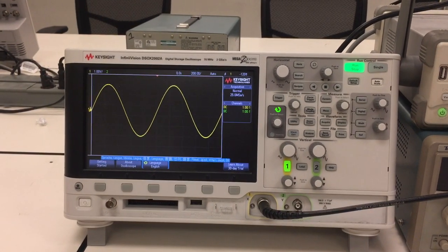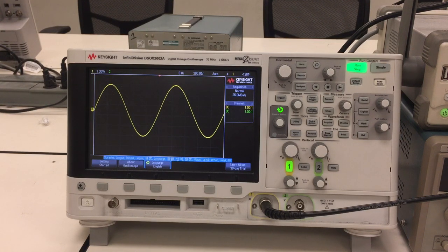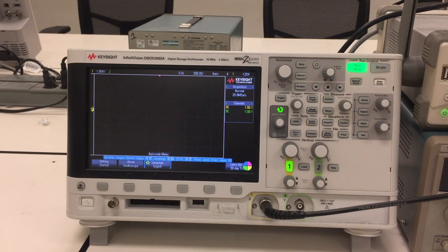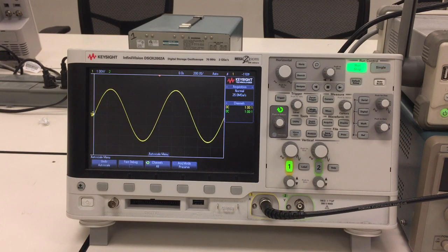So for most modern oscilloscopes, when they're dealing with these clean, not noisy signals, simple signals, you really don't have to worry about actually fixing the display. So all you have to do is hit the autoscale here and the system will automatically set everything up perfectly for you.